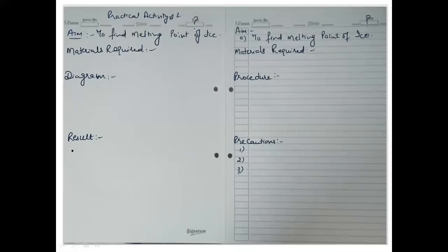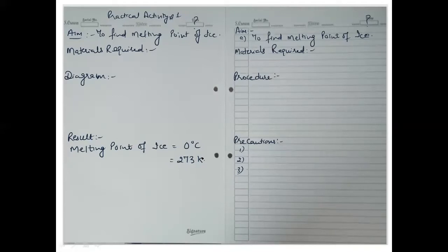What will the result be? The melting point of ice is zero degrees Celsius. The Kelvin value is 273 K. So you know what to write with pen and what to write with pencil — that is the left-hand side and right-hand side of the practical sheets.